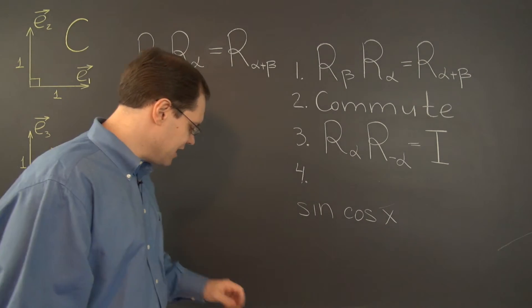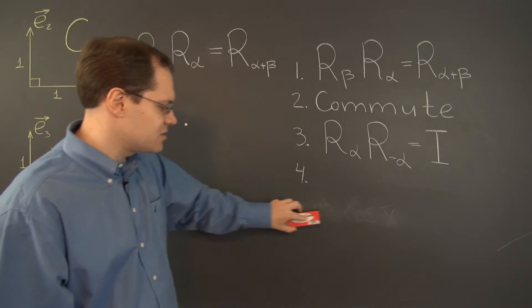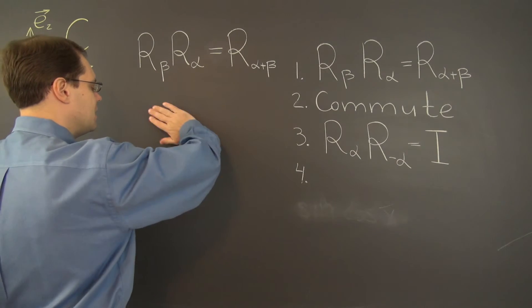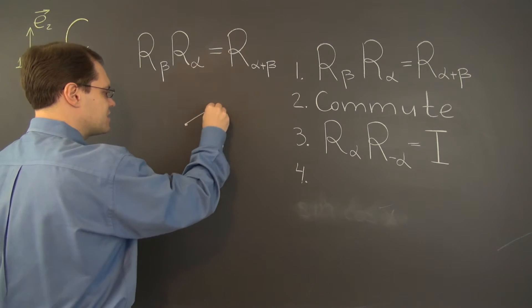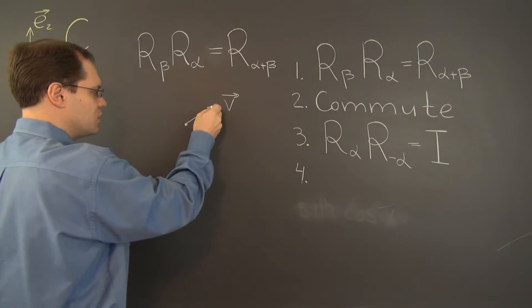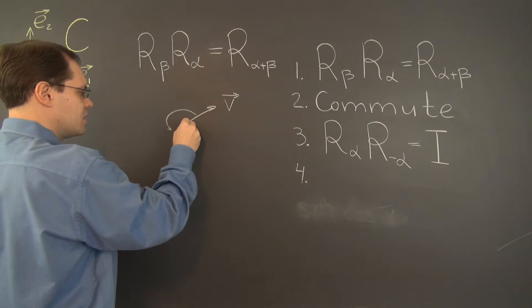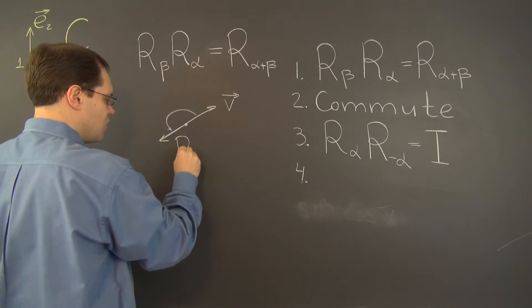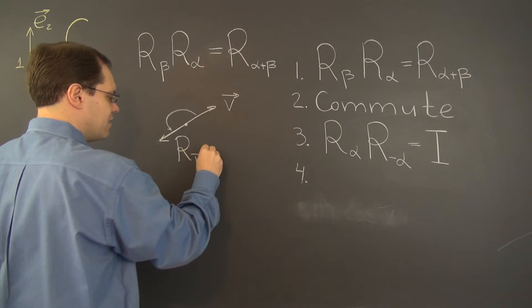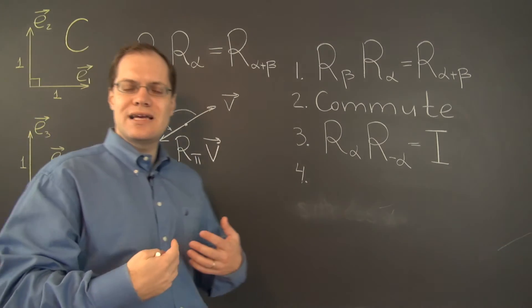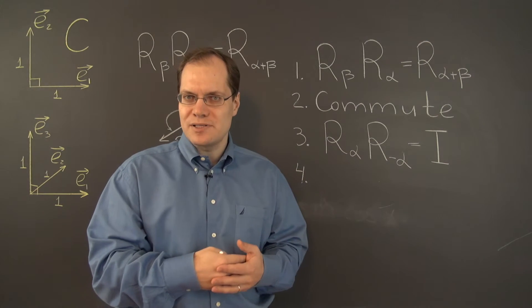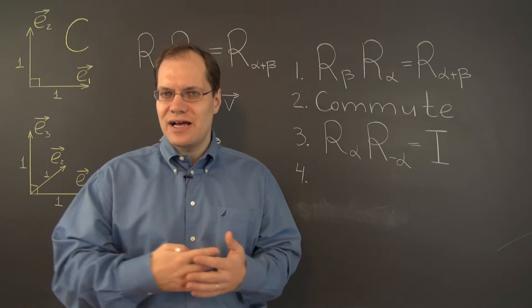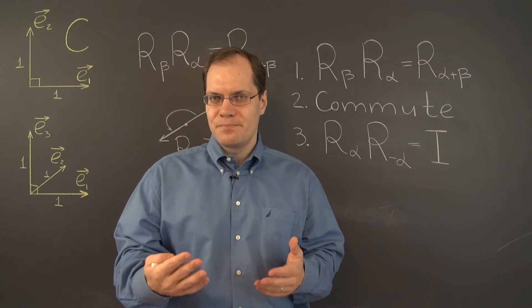Unless it's rotation by pi, in which case every vector becomes opposite of itself. So if this is the vector v, then when you rotate it by pi, it becomes this vector right here, minus itself. So this is R sub pi of v. So when you're rotating by pi, every vector becomes opposite of itself, so every vector is an eigenvector, and minus one is the eigenvalue corresponding to all of them.